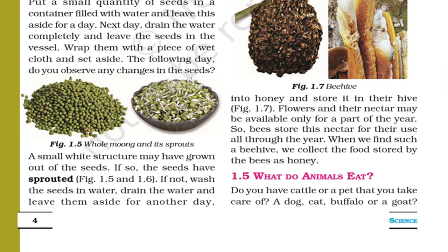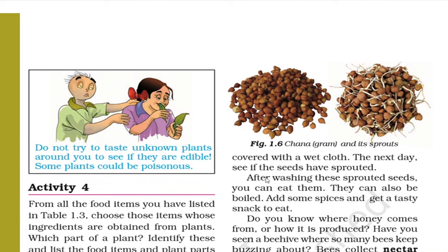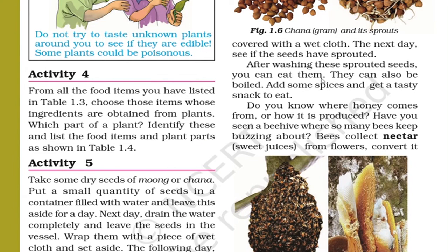When these small white structures come out of any food grain, that seed is called sprouted. If not sprouted, wash the seeds in water, drain the water, and leave them aside for another day. After washing these sprouted seeds you can eat them — it is really healthy. They can also be boiled. Add some spices and get a tasty snack to eat. It is very good and healthy to eat sprouted seeds.